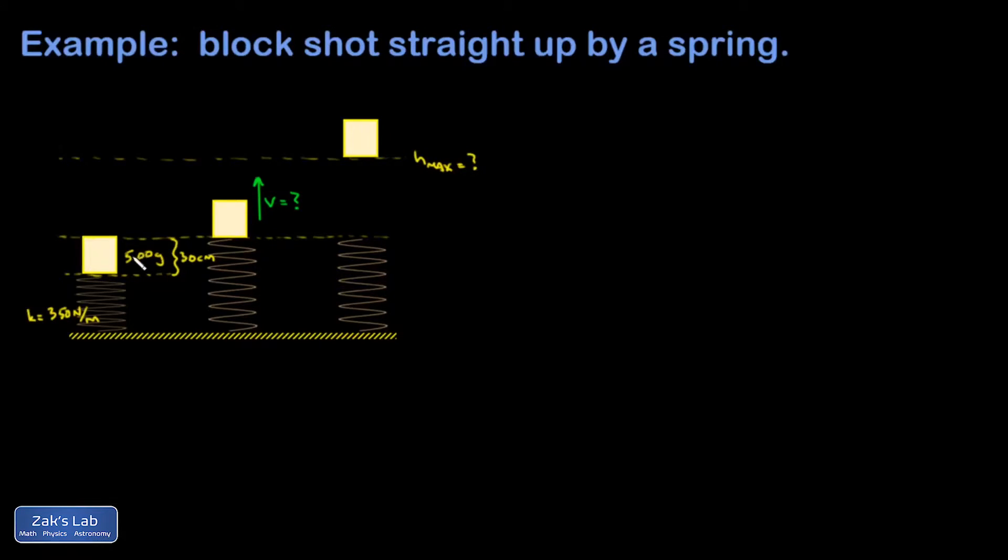Here I've got a block on a spring, and I've compressed that spring 30 centimeters below its equilibrium length. The spring has a constant of 350 newtons per meter, and then we're going to release the system.